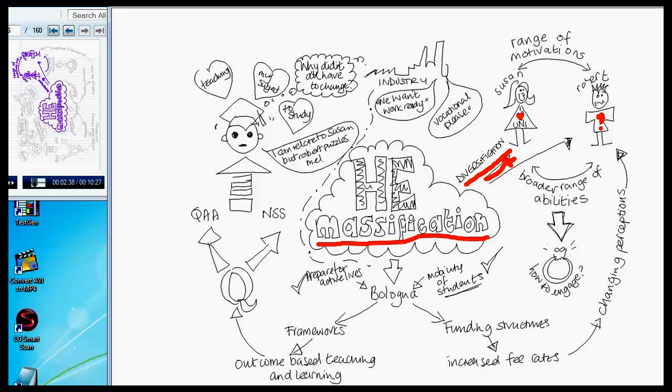And what we also have as a consequence of that is a broader range of abilities. And what all of this leads to is different levels of student engagement, like the engagement ring. And so we have the conundrum of how to engage both Robert and Susan in the classroom.